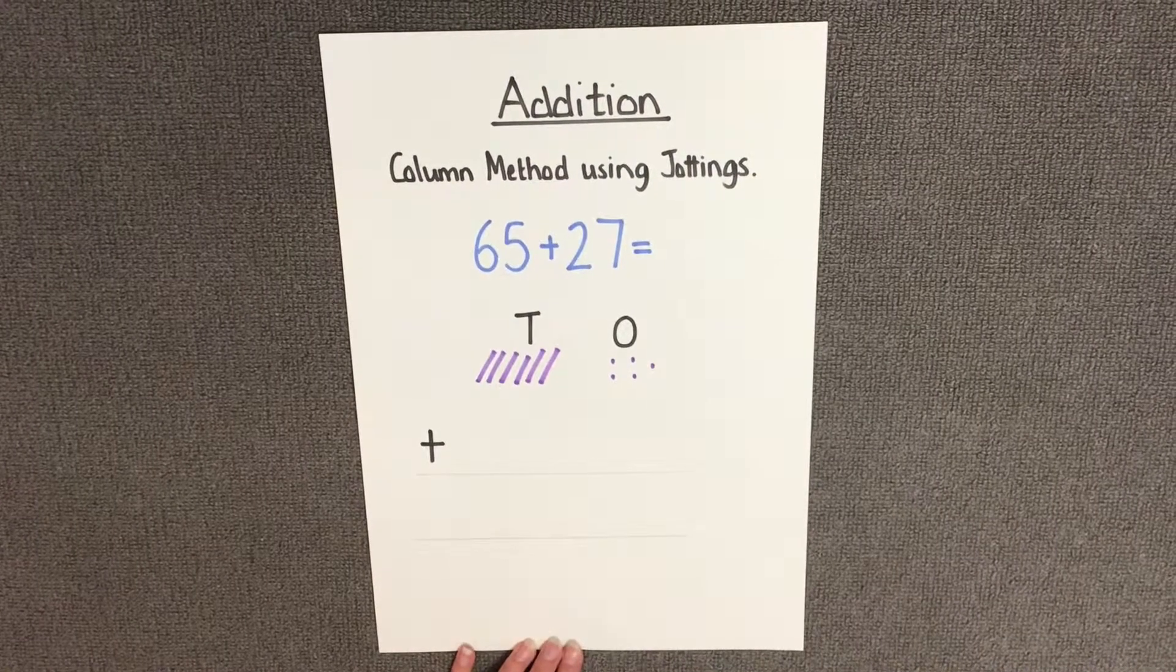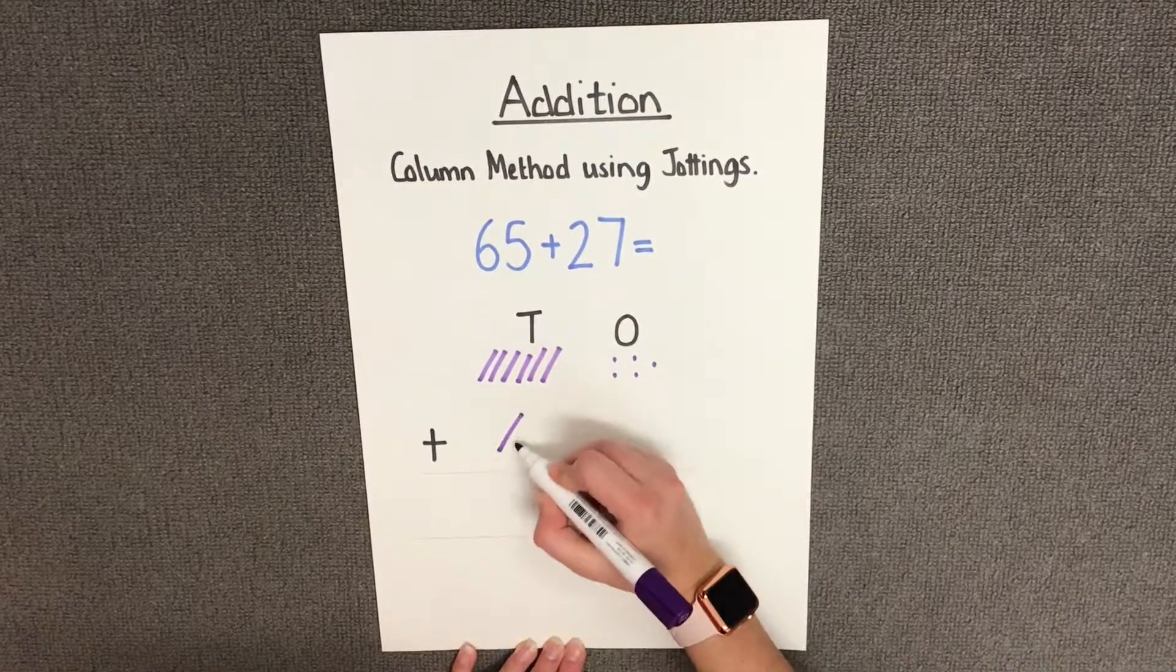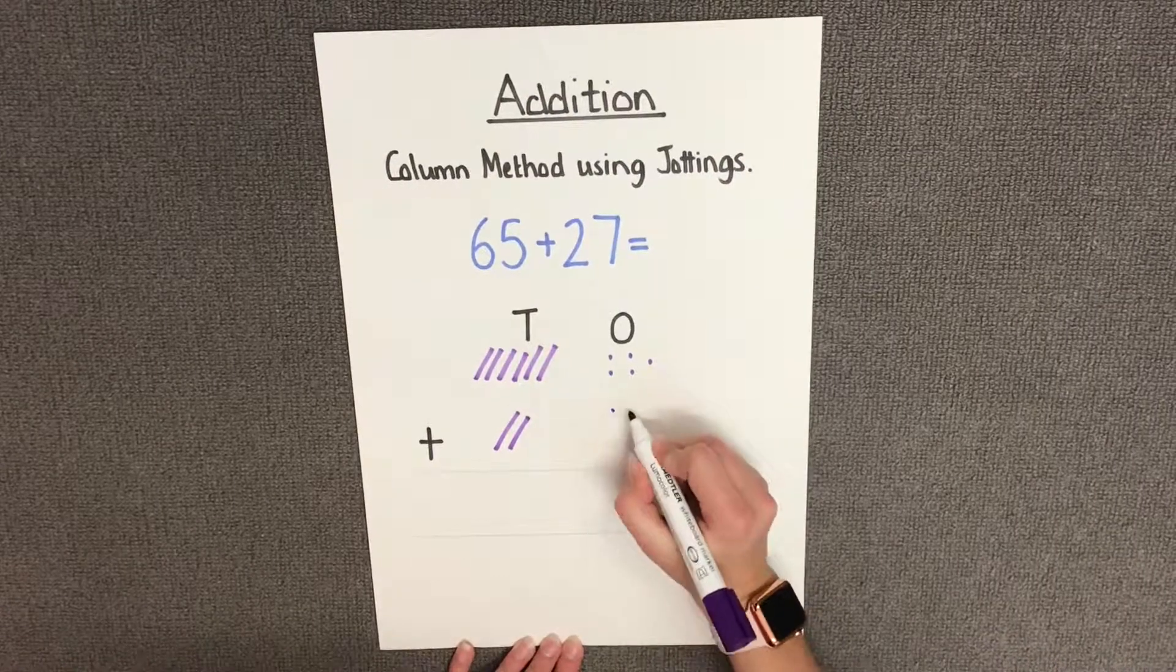Then we need to show the number 27. So I have 2 tens and I have 7 ones.